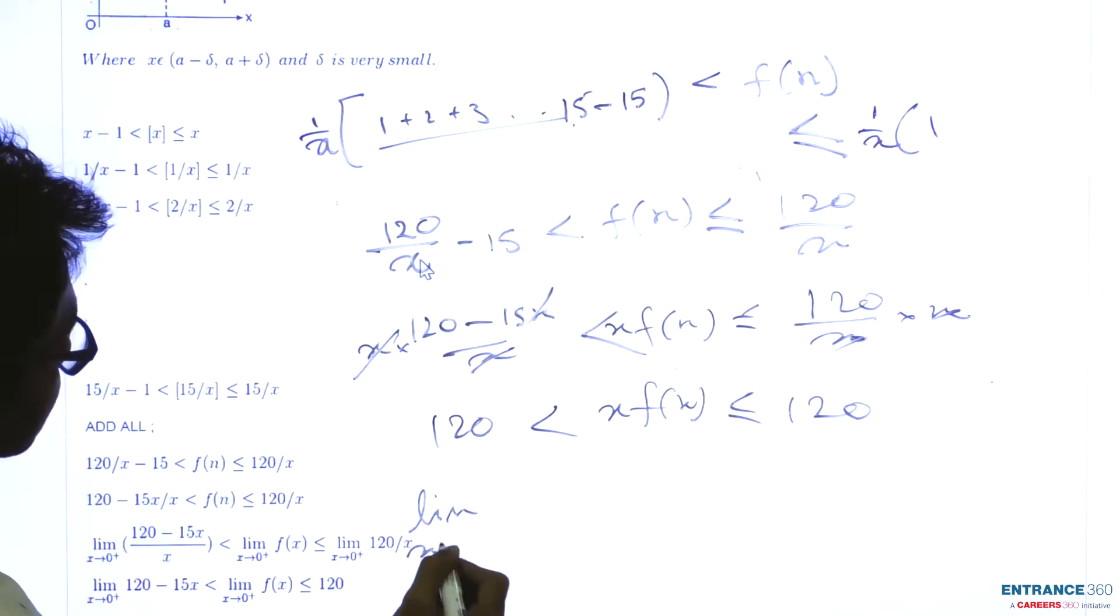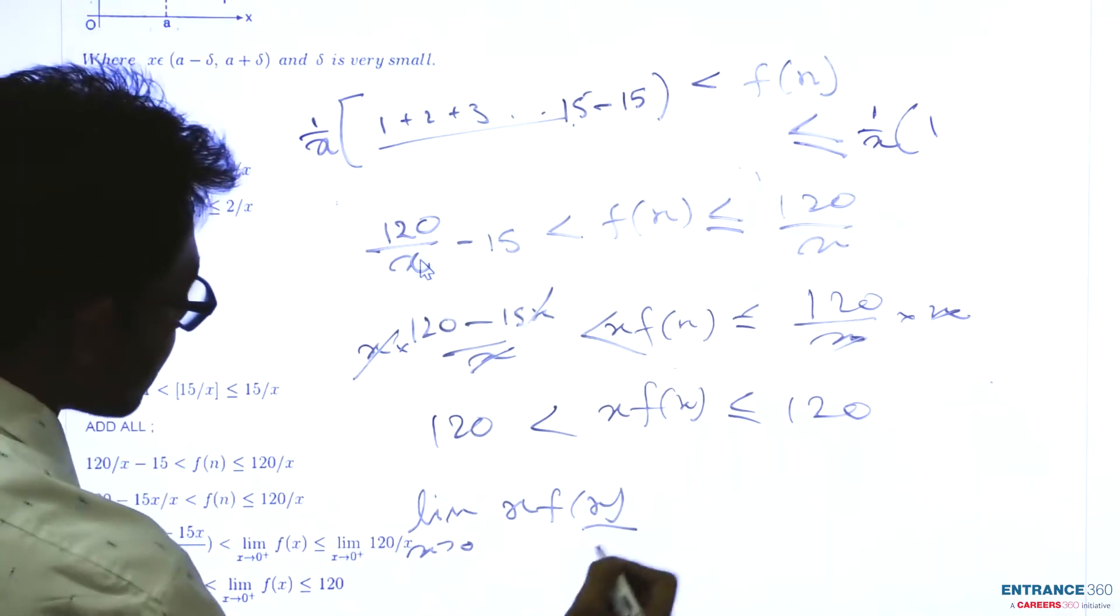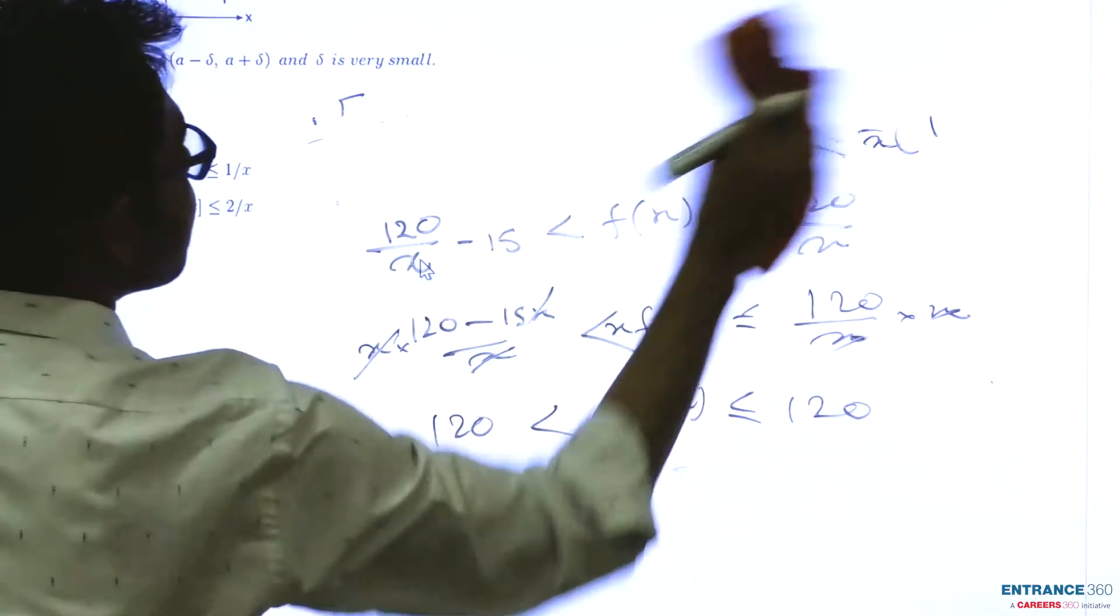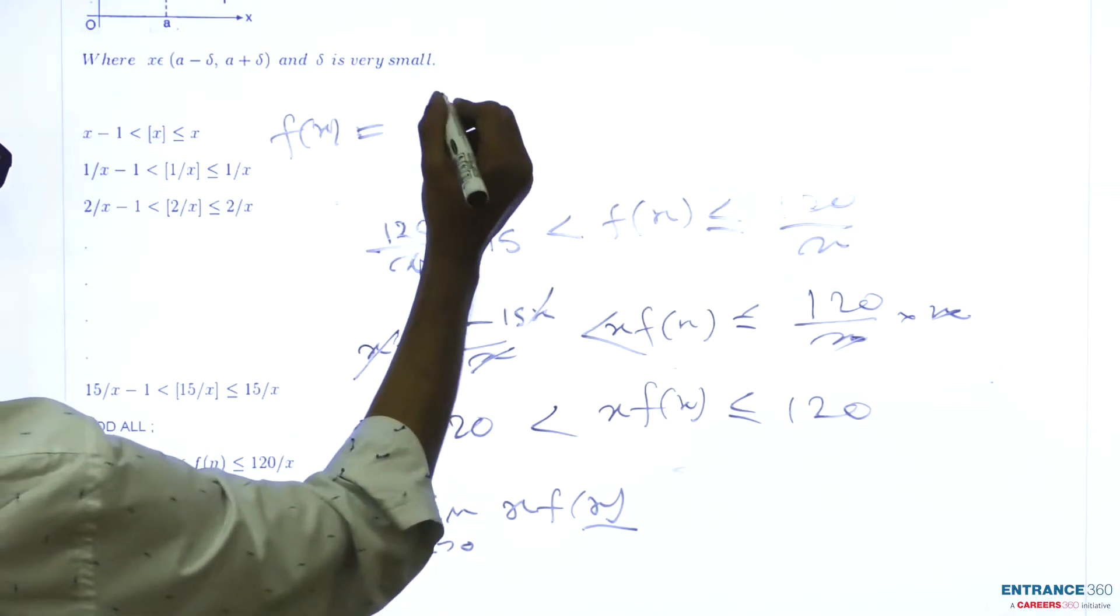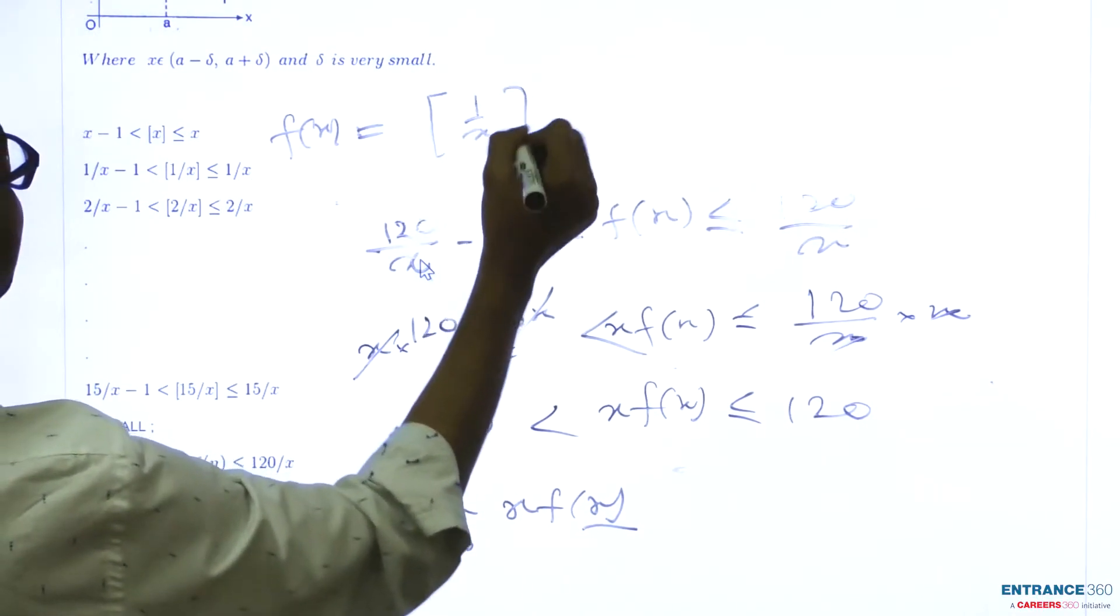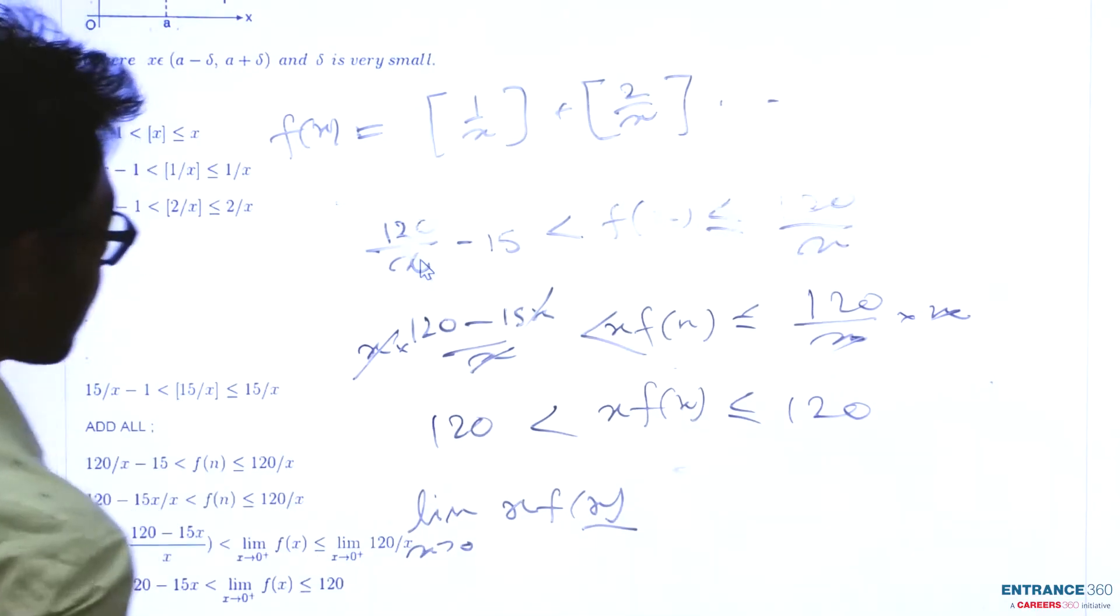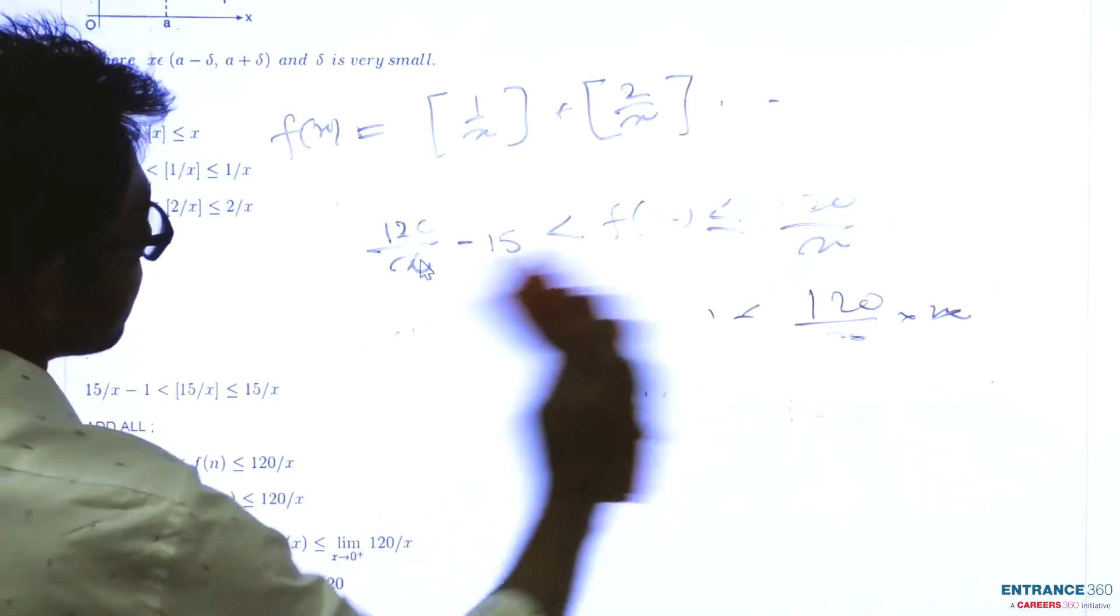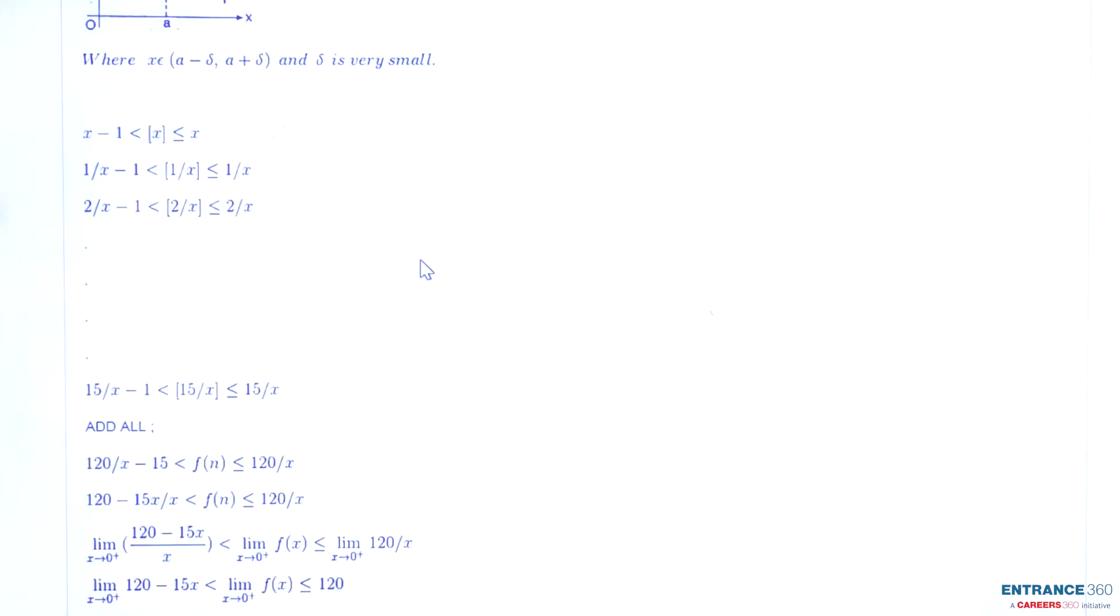Hence, we need to find limit x tends to 0 of x times f(x), where f(x) is the sum of greatest integer functions [1/x] + [2/x] up to [15/x]. From here we get that the limit as x tends to 0 of x·f(x) is 120. So our final answer is 120.